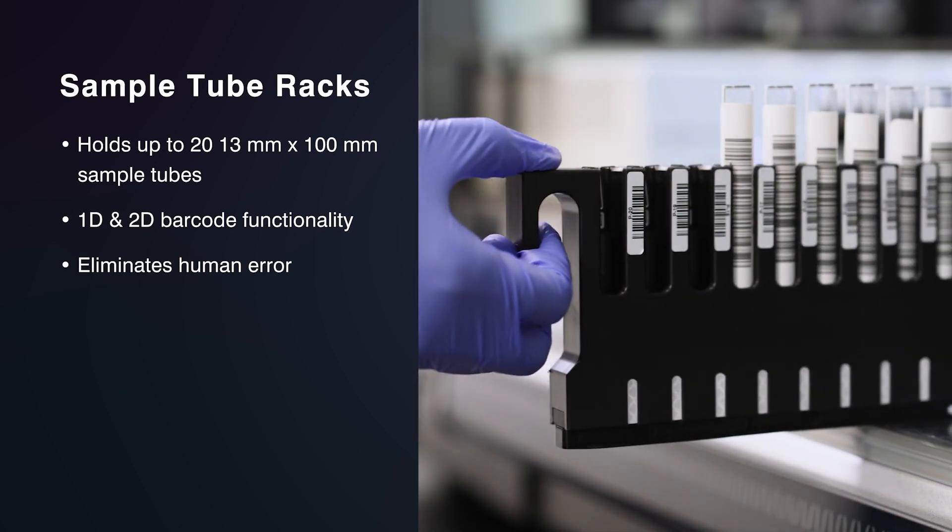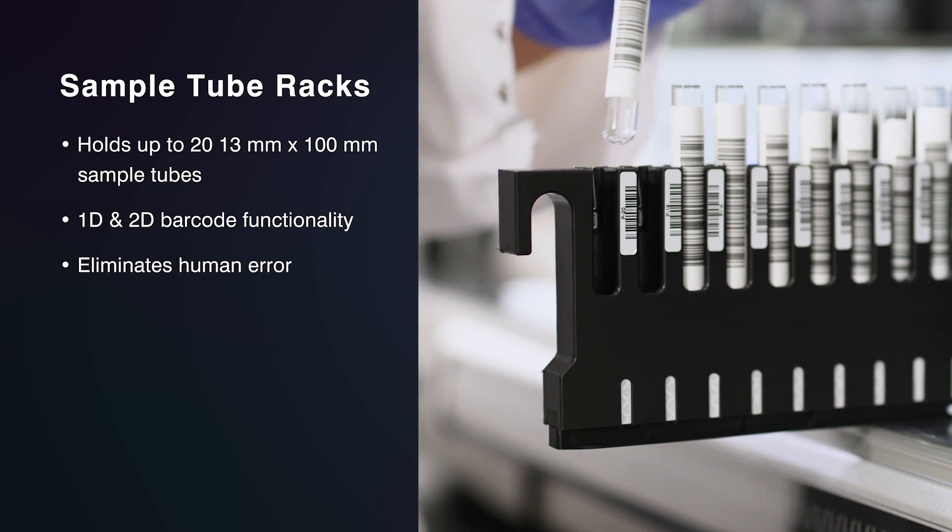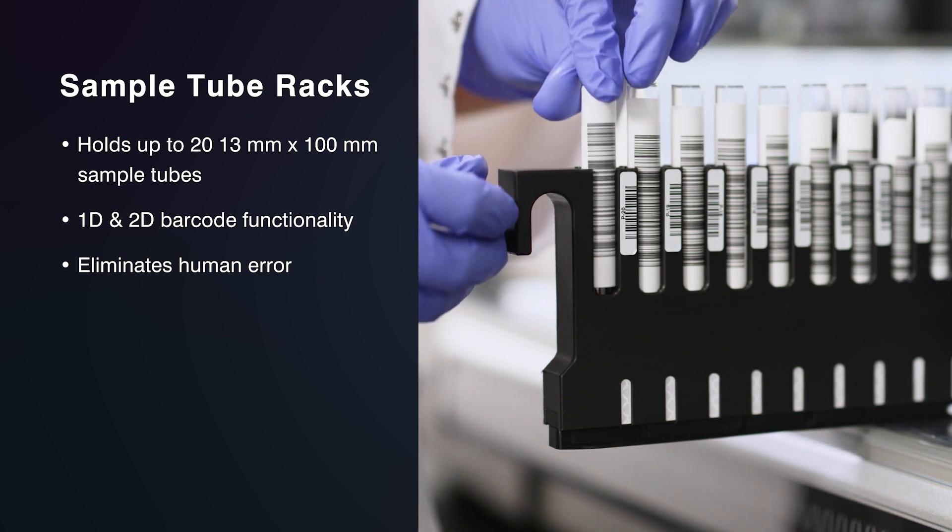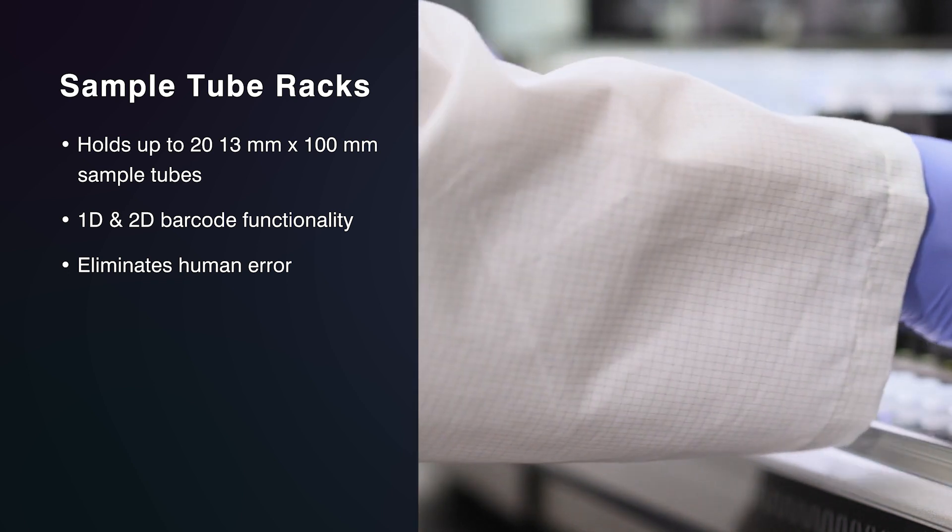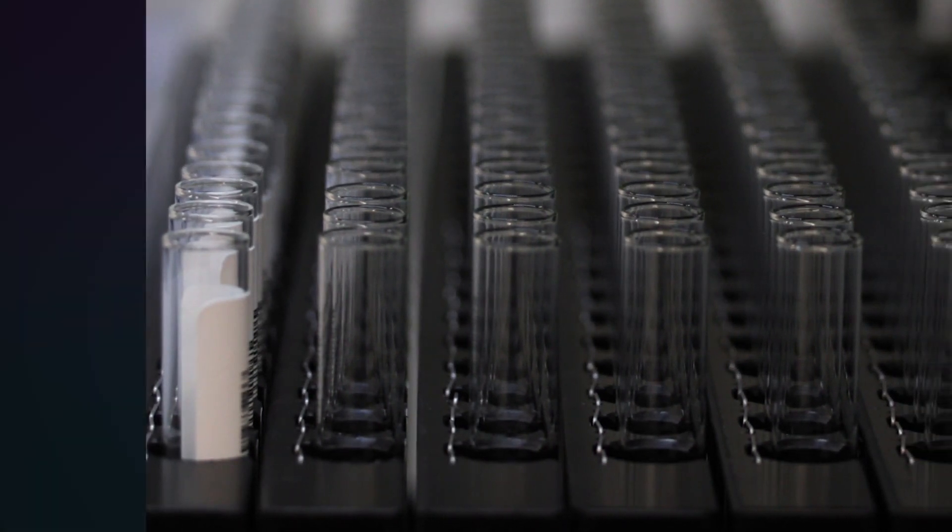Sample tubes are loaded into the racks and then scanned for barcodes upon loading onto the deck. Each sample rack can hold up to 20 sample tubes. Both 1D and 2D barcodes can be utilized for optimizing sample management. This eliminates human error associated with the manual entry of data.